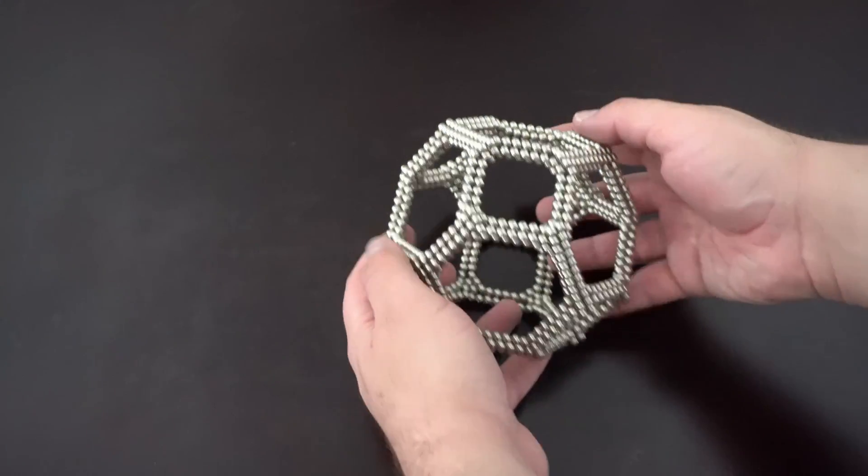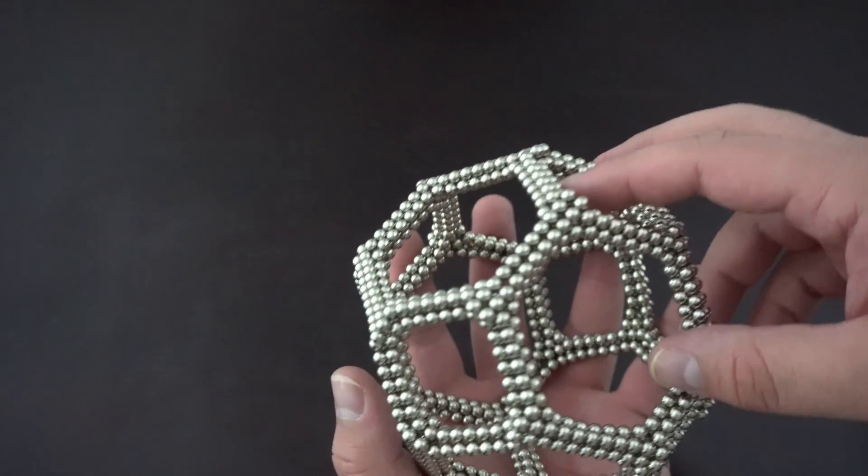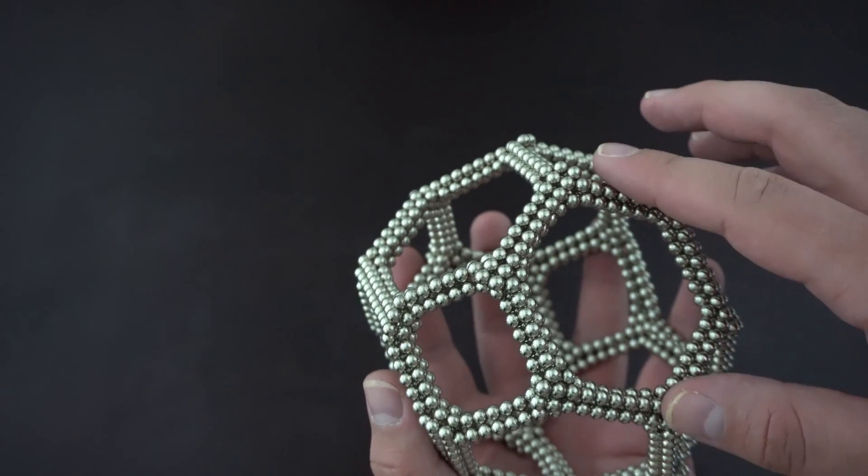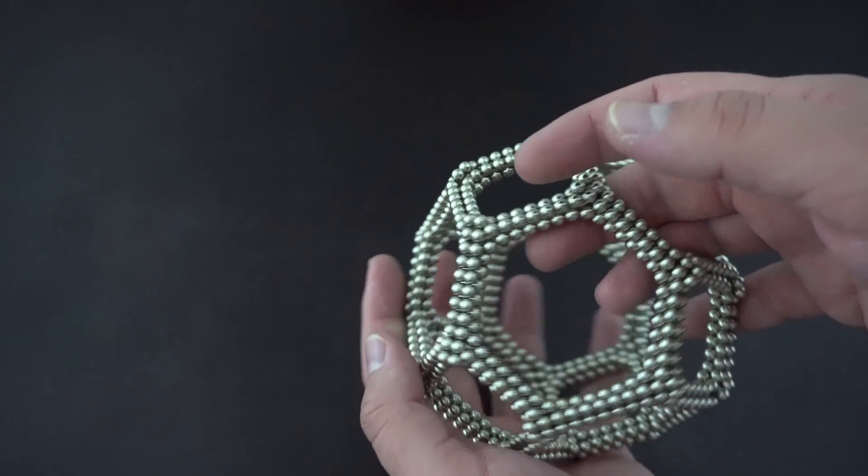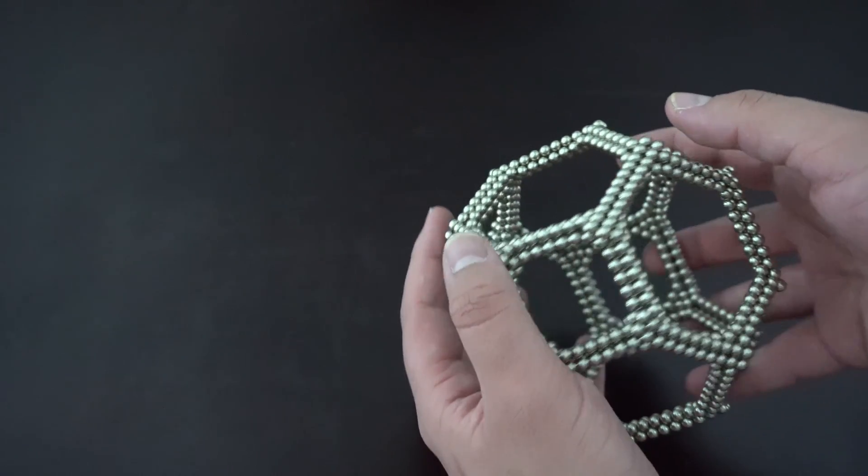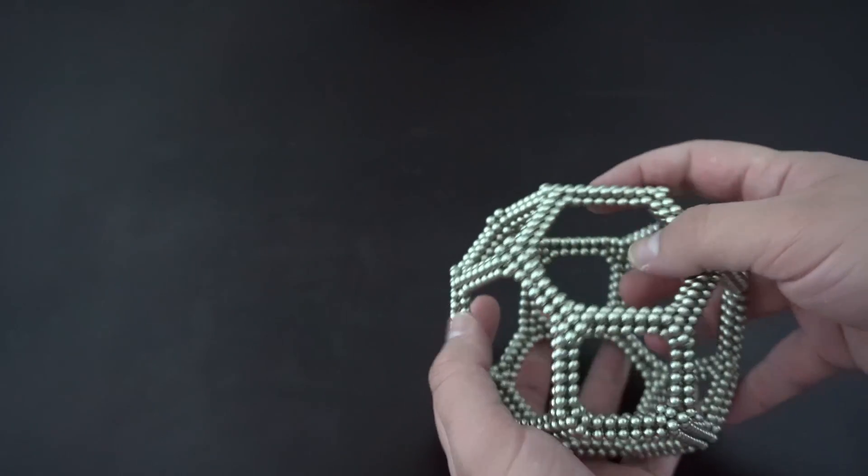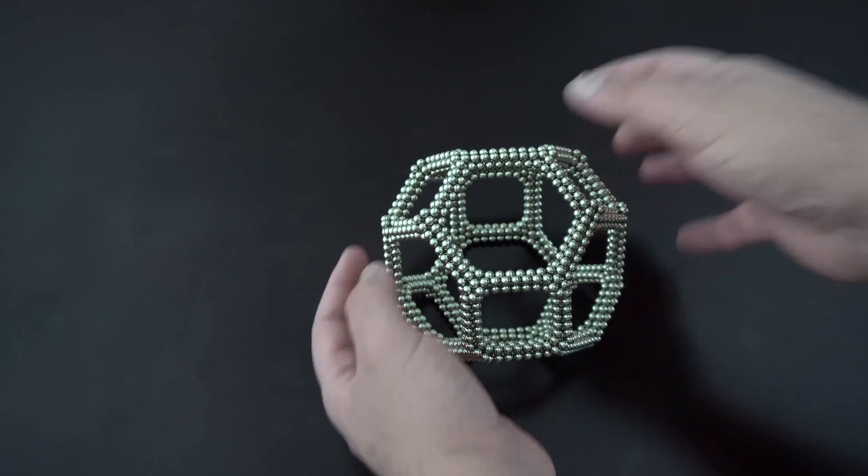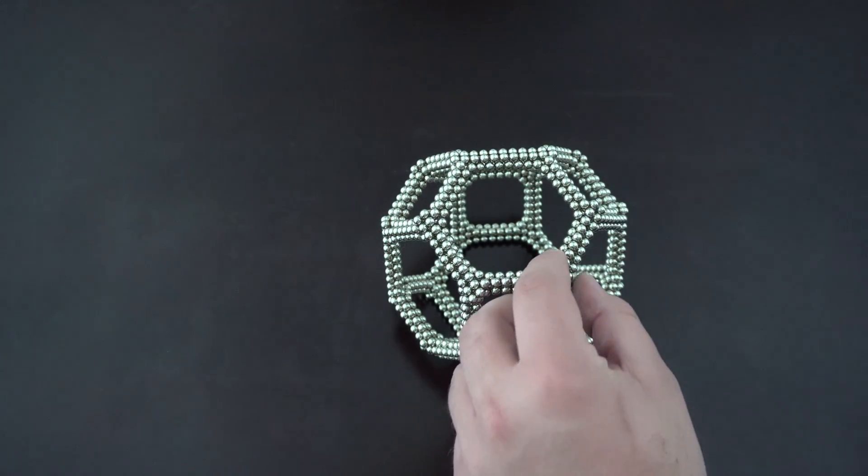Now when I'm building polyhedron frames, I generally really like these bicoupled strut frames because of how versatile they are and you can make so many different things with them. The truncated octahedron though is one that had really caused me a lot of problems trying to figure out how to build one for several years actually.